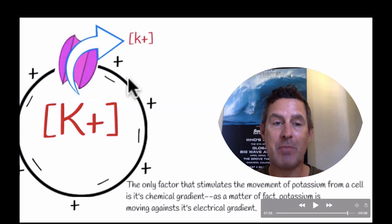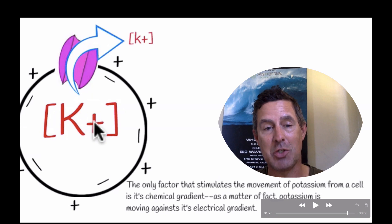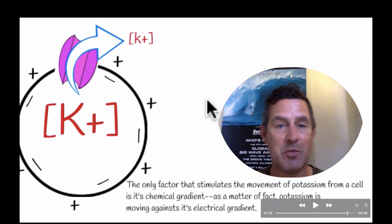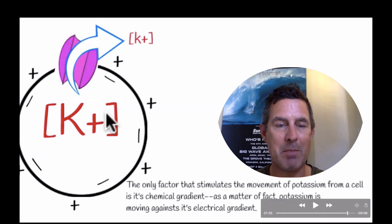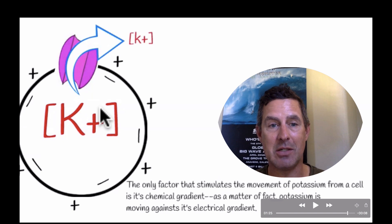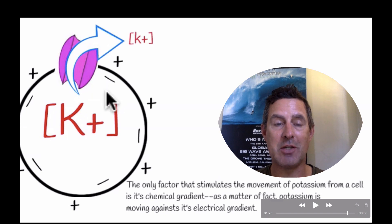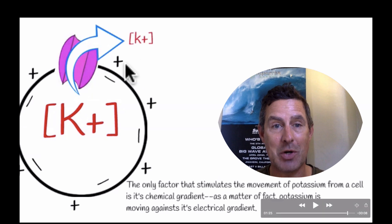But one thing you may notice is that potassium is positively charged. The positive charge of potassium is not attracted to the positive charge on the exterior of the cell. As a matter of fact, based on charge alone, potassium would prefer to stay in the cell where it is negatively charged — because opposite charges are attracted to each other. But in this situation, potassium's chemical gradient is so large that it disregards its electrical non-attraction to the exterior of the cell.